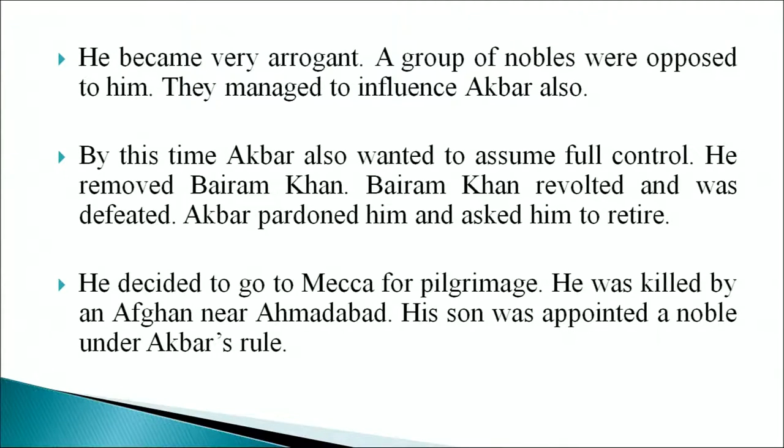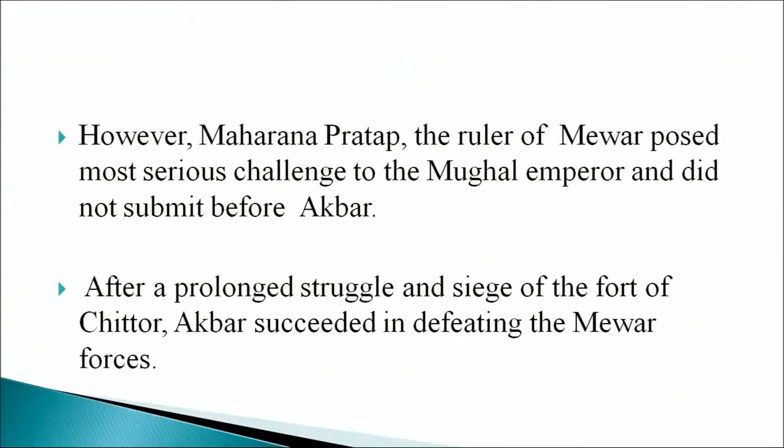Akbar started a policy of expansion after overcoming initial problems and consolidating his hold on the throne. Regarding Rajasthan, Akbar was fully aware of the importance of Rajput kingdoms and wanted them as allies in his ambition of establishing a large empire. He tried to win over the Rajputs wherever possible and inducted them into Mughal service. He also entered into matrimonial alliances with Rajput rulers. Raja Bharmal of Amber was the first to enter into alliance with Akbar.